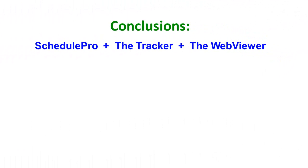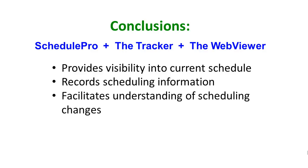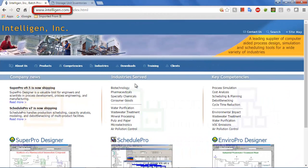In summary, the integrated use of SchedulePro, the tracker, and the WebViewer provides plant personnel with visibility into the current schedule, allows key scheduling information to be recorded, facilitates understanding of changes to the schedule over time, and enables resources to be assigned appropriately as the schedule evolves. This concludes the overview of SchedulePro's suite of tools for managing a manufacturing facility's production planning, scheduling, tracking, analysis, and reporting needs. For additional details on how to create models in SchedulePro, please refer to the SchedulePro manual, the online training videos, and the SchedulePro example README files. In addition, please visit www.intelligen.com to download the free evaluation version of SchedulePro in order to test-drive the SchedulePro examples.